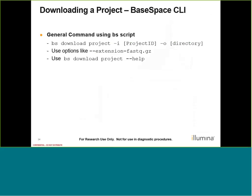Now let's talk about downloading a project using CLI. The general command uses the BS script: BS download project -I and the project ID, then -O for the destination directory. With this command, we can use options like --extension and designate the extension of file types we wish to grab — for example, fastq.gz. You could also specify VCF, genome VCF, BAM, or any other file type you'd like. And of course you can also use BS download project --help to see exactly what options are available.